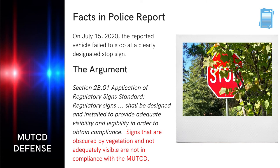The third example of the MUTCD defense, also using a stop sign, is a common problem in urban areas. Section 2B.01, Application of Regulatory Signs Standard, states regulatory signs shall be designed and installed to provide adequate visibility and legibility in order to obtain compliance. Signs that are obscured by vegetation and not adequately visible are not in compliance with the MUTCD. If you were cited with a traffic sign-related ticket — whether that be a stop sign, yield sign, speed limit sign, and so forth — and the sign was obscured by, for example, vegetation, be sure you take a good photograph before the vegetation is removed and bring the photo with you to court with this MUTCD reference.